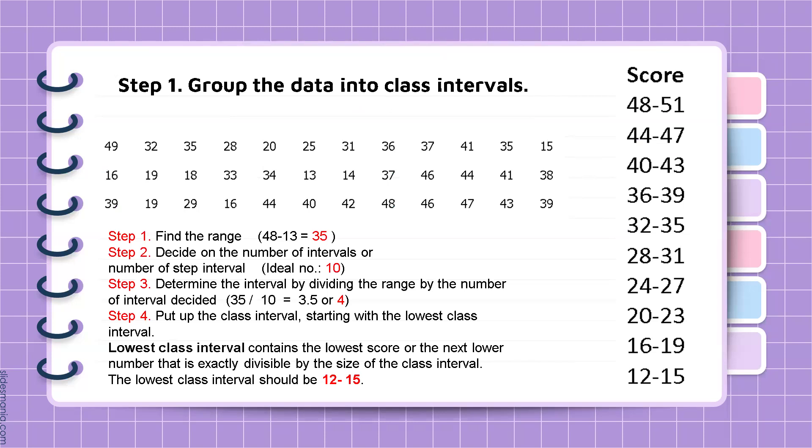Step one is to find the range. The range is equal to the highest value minus the lowest value or score. So 48 minus 13 is equal to 35. So our range is 35.